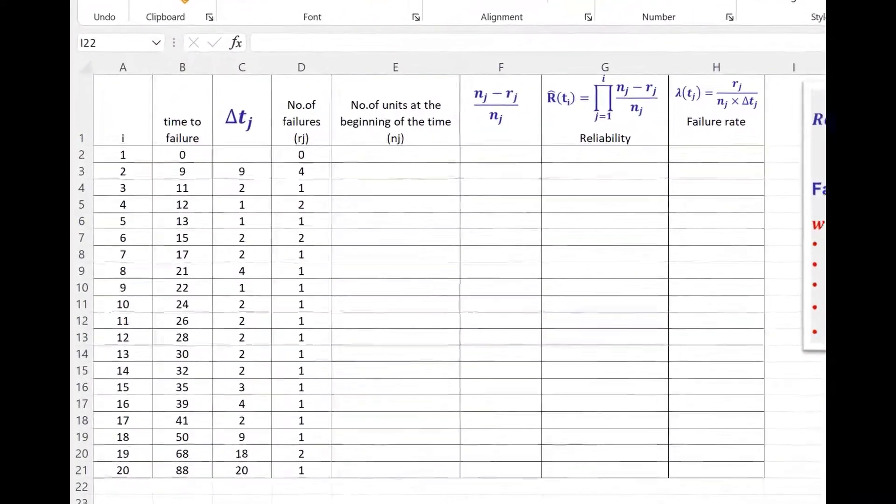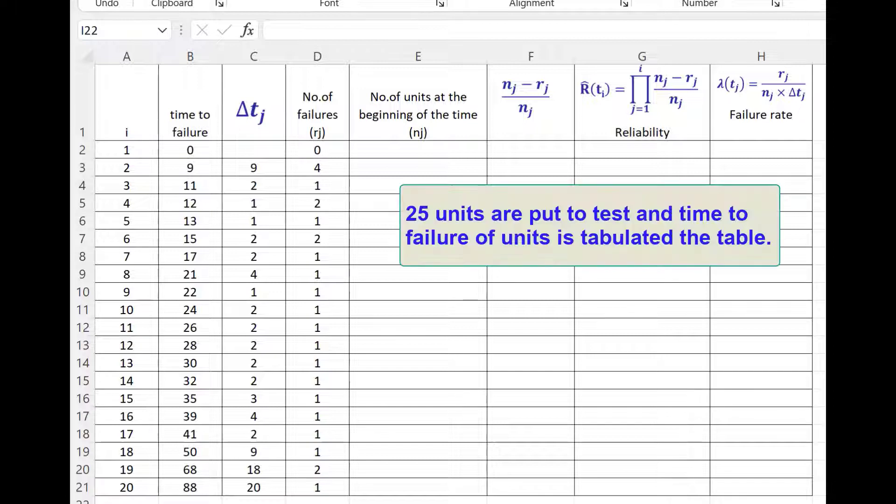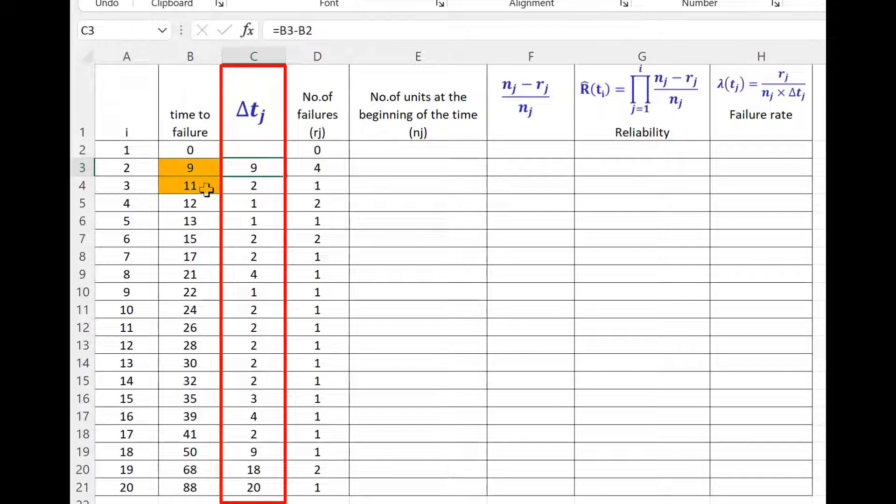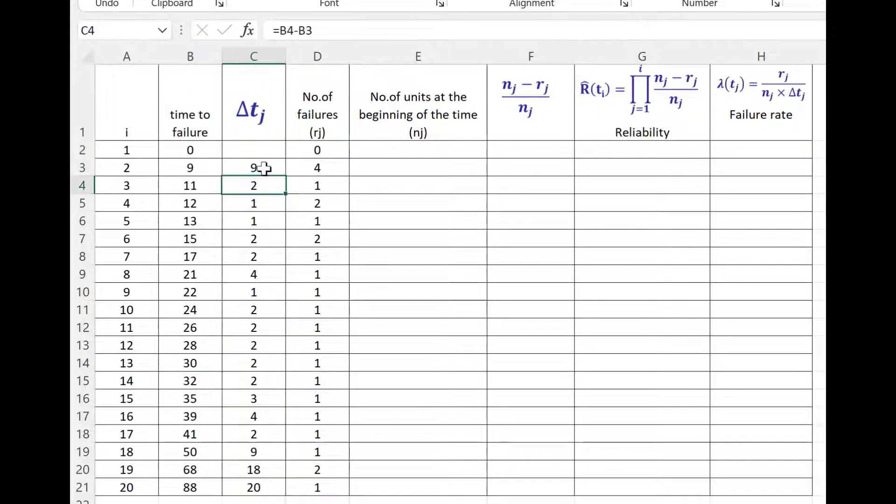Let us now see an example of grouped data. 25 units are put to test and time to failure of different units is tabulated in the column time to failure as seen here. The delta tj column shows time difference between consecutive steps. That means between time to failure 11 and 9, it will be 2, etc. And from 0 to 9, it is 9. So it is just calculated as difference between consecutive failures reported. The number of failures reported is tabulated in column rj.